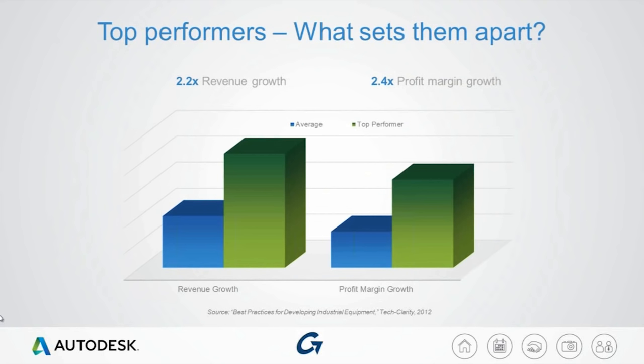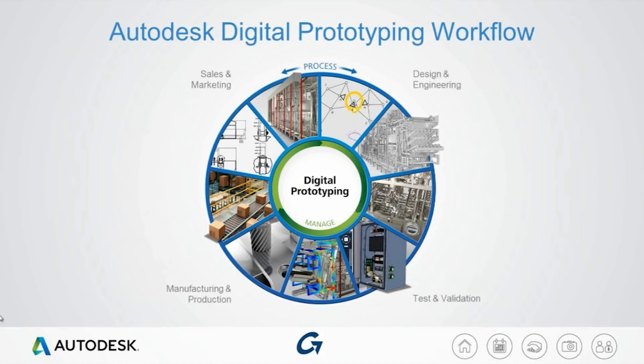The same study focused on top performers and what these companies are doing to achieve superior financial performance. Top performers were defined as those growing revenue and profits two to two and a half times faster than the average company in the study. One common characteristic is that they extensively used digital prototyping processes throughout their entire development process — not just for design and engineering, but all the way through testing, validation, simulation, manufacturing, production, and sales and marketing.